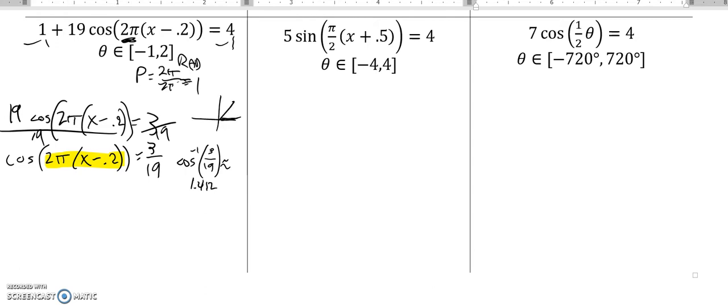And to get the other value with it, this is cosine. Cosine's width, so there's my 3/19, that's the angle I found right there, the 1.412 radians. There's another angle that has the same width. So if I go 2π minus whatever that is, I get the other answer.